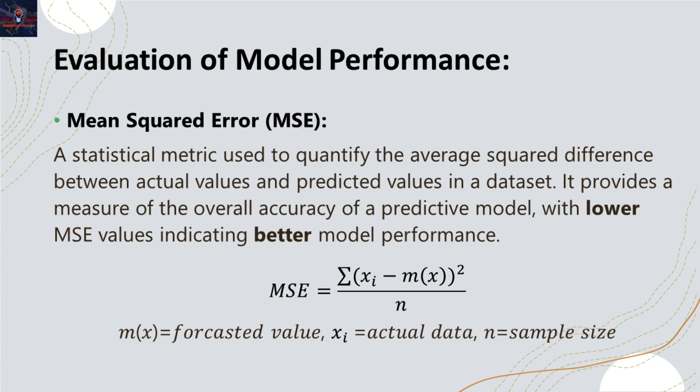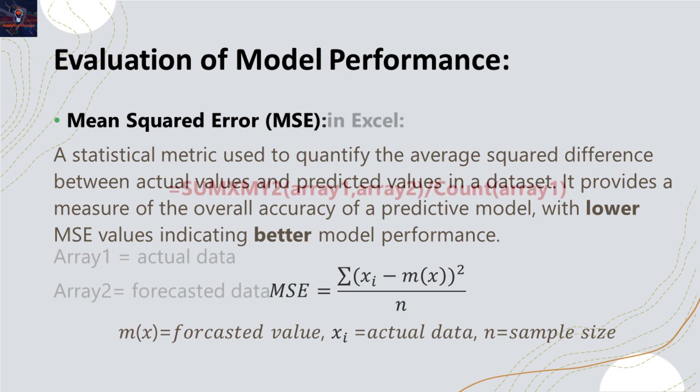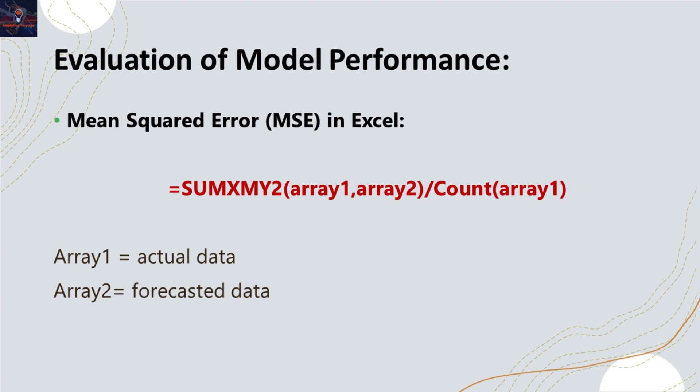I'd like to introduce a valuable function in Excel that can help you calculate the mean squared error. It is called the SUMXMY2 function. This function is used to find the sum of the squares of the differences between corresponding values in two arrays. In the context of calculating MSE, you can use this function to find the sum of squared differences between your actual values and predicted values, and then divide it by the number of your data points. We can find that count by using the COUNT function in Excel, which returns the number of data points in the dataset.